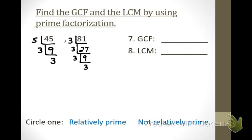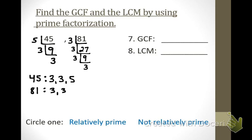Now put the prime factors in order from least to greatest. For 45 the smallest prime factor is 3, then another 3, then 5. Some of you may have started differently — all that matters is at the end you put them in order from least to greatest. Then put all four 3s from 81 underneath. Emma, what should I do next? Circle the pairs. What should I circle? 3 and 3 — the two become 1. Bring down the 3 and the other 3. What's the answer? 3 times 3 is 9.